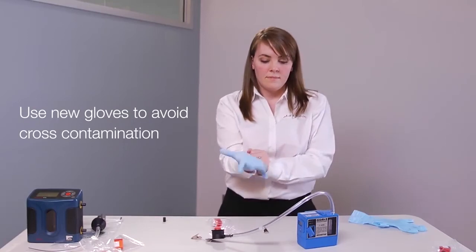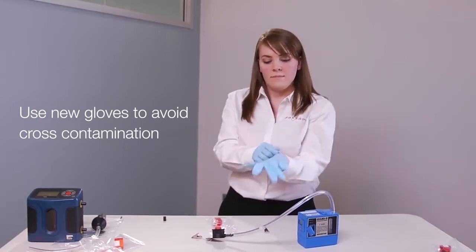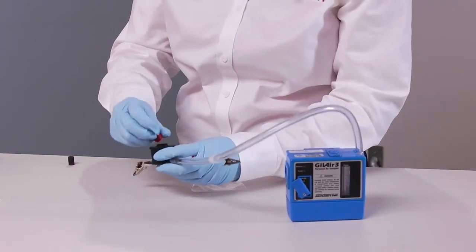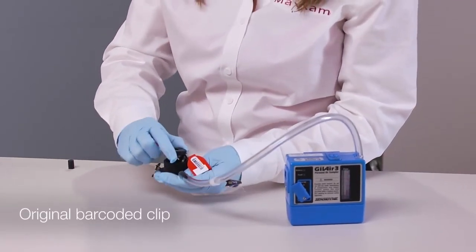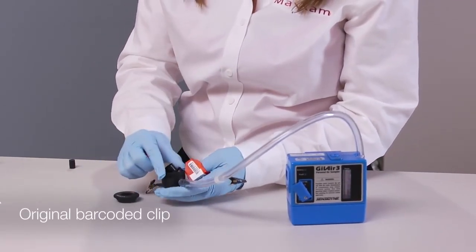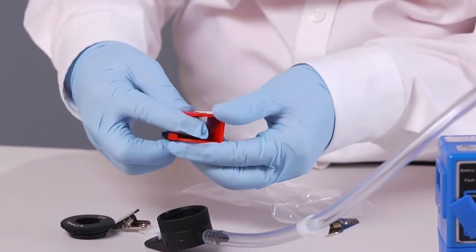Using new gloves between samples to avoid cross contamination, open the faceplate of the sampler. Obtain the correct original barcoded transport clip for that cassette and return it to the original clip and baggie.